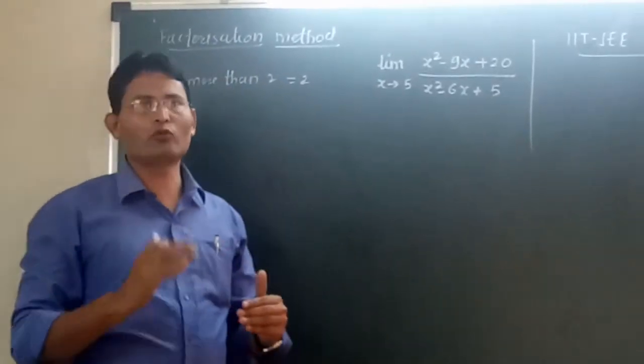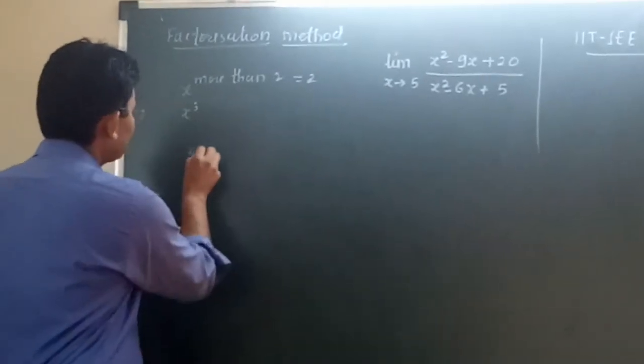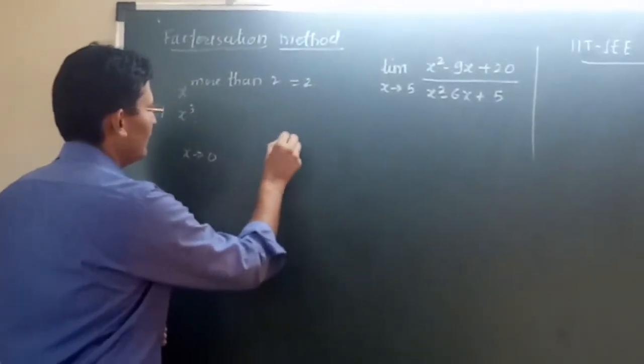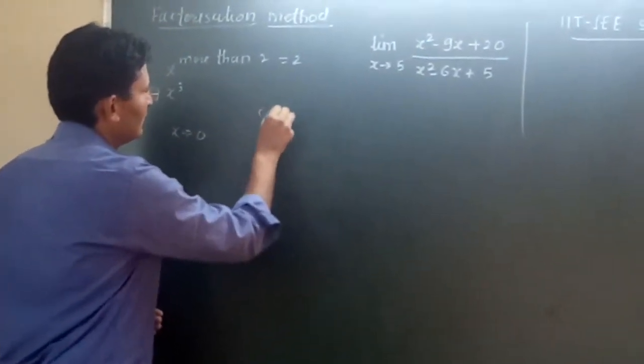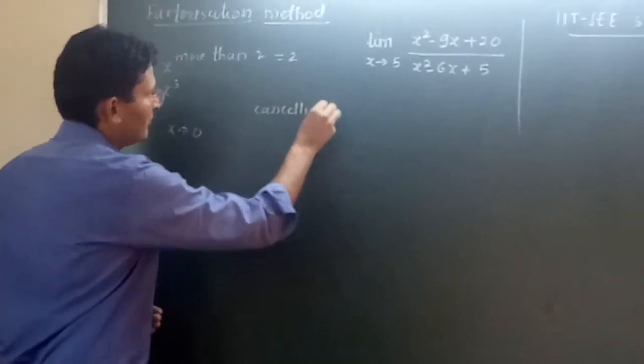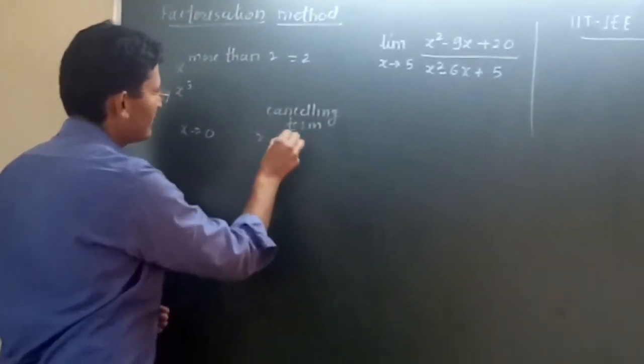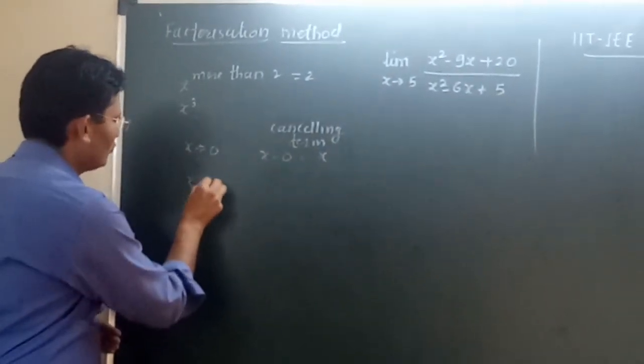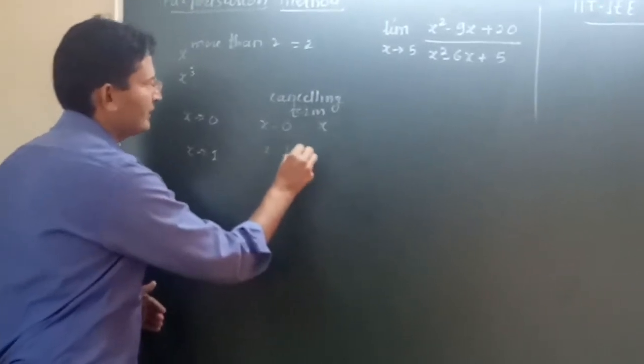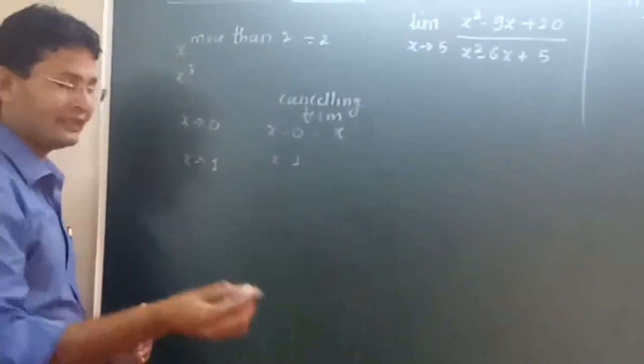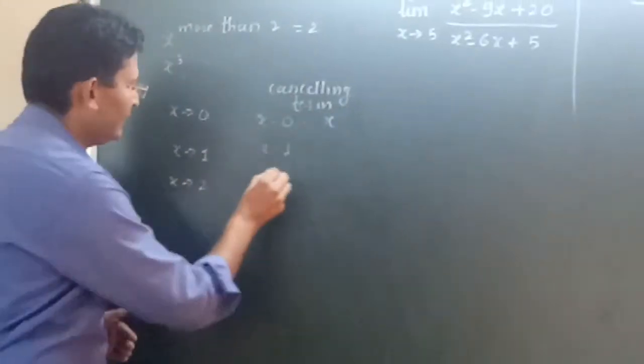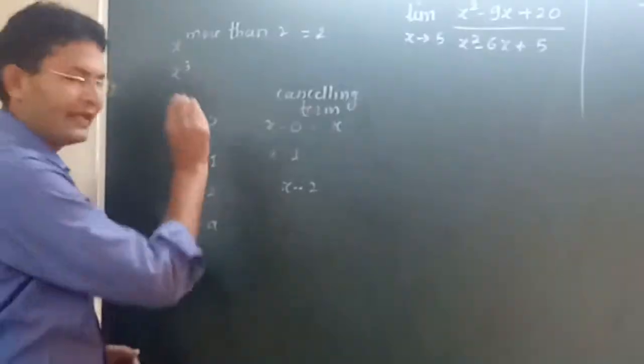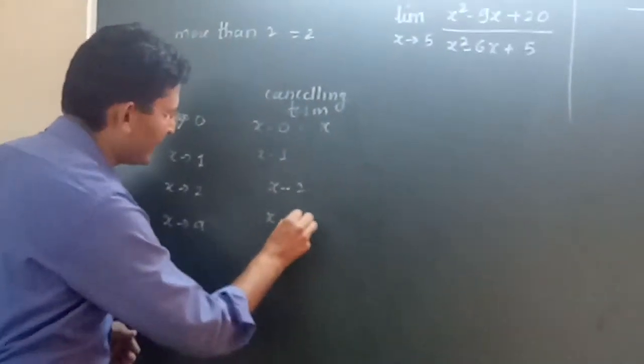Then we should understand what is the canceling term. Let's say limit x tends to 0. If it is limit x tends to 0, then our canceling term is x minus 0, which equals x. If x tends to 1, then x minus 1 is the canceling term. If x tends to 2, then the canceling term would be x minus 2. If x tends to a, then the canceling term is x minus a.